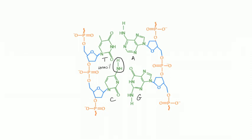The bond between guanine and cytosine has three hydrogen bonds, but the bond between adenine and thymine only has two. So segments of DNA with higher G-C content have more hydrogen bonds and therefore a higher melting temperature — it's more difficult to break those strands apart. That's a testable point for Step 1.